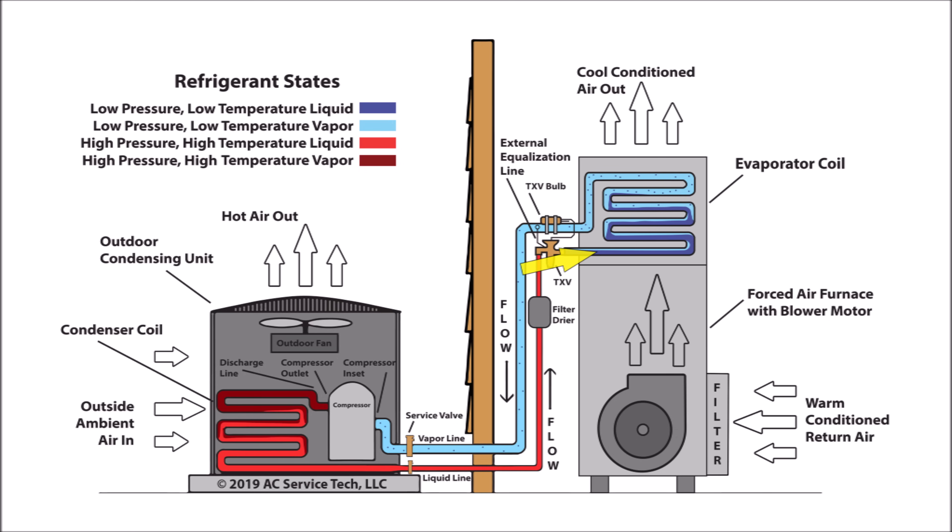It's then going to start absorbing heat energy from within the building, from the air crossing the evaporator coil. It's going to absorb more and more heat energy, but it's not going to increase in temperature — it's going to do that until it's absorbed so much heat energy that it can then turn into a complete vapor. And once it turns into a complete vapor, the refrigerant then starts to increase in temperature. This is called superheating. The temperature increase between where the refrigerant turns into a complete vapor and where it exits the evaporator coil is called the superheat.